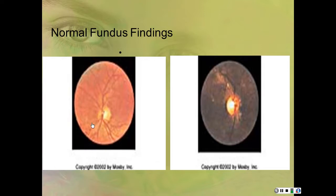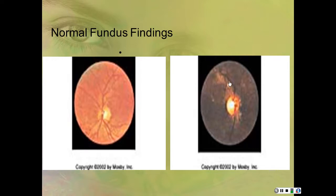Here are normal fundus findings on a white person and on a black person. You don't care as much about the color as you want to check that the arteries and veins are smooth going over the disc margins—clear on the white person. On the black person, there's slight blurriness and spots around 11 o'clock and elsewhere that could be drusen bodies, which look different on darker retinas—more white rather than yellow as on a lighter retina.